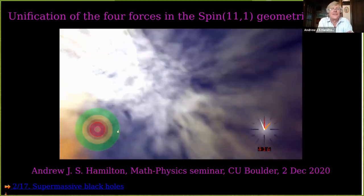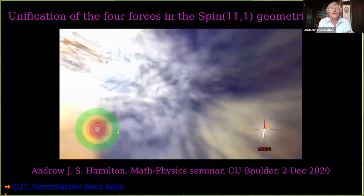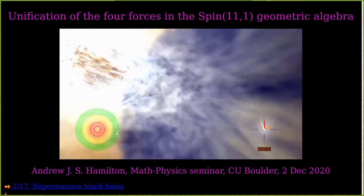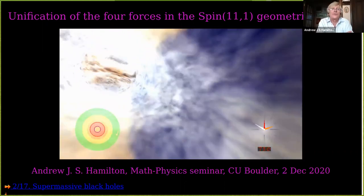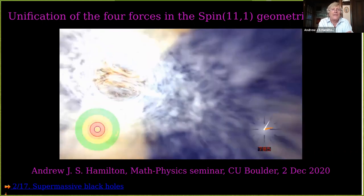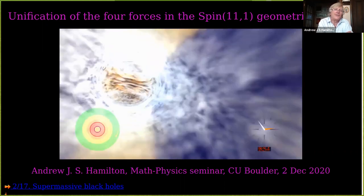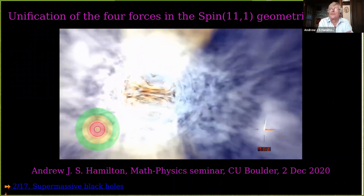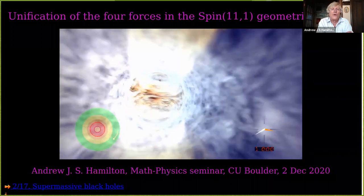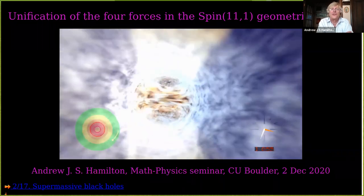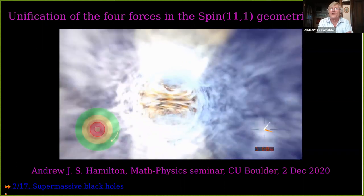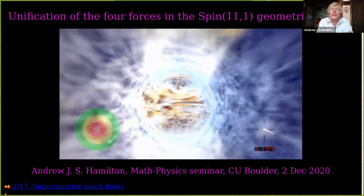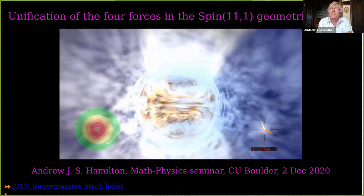What you're looking at in this general relativistic visualization is falling into a black hole. The gas is a supercomputer simulation by John Hawley. If you look at the map at the lower left, you will see us falling — you can see the trajectory of us falling into the black hole. The green region represents the innermost stable circular orbit of a black hole.